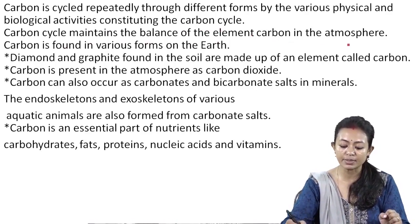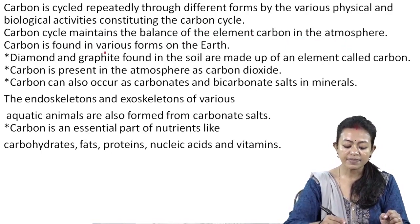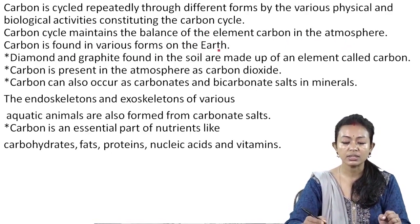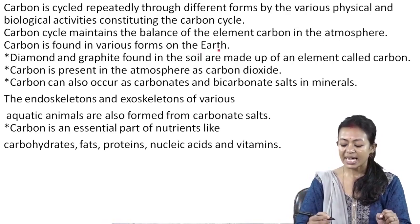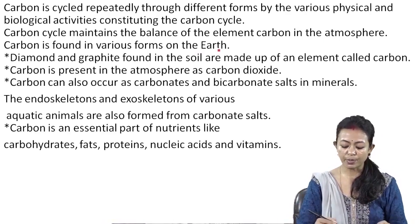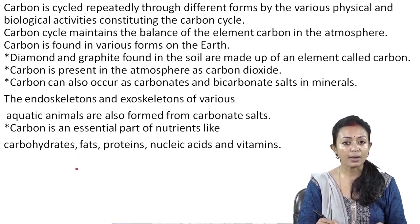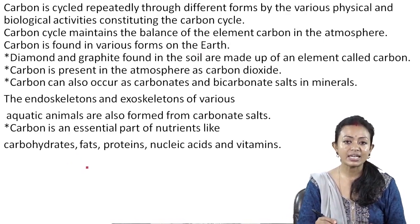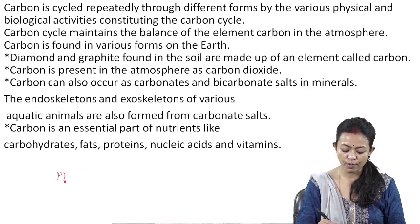The carbon cycle maintains the balance of the element carbon in the atmosphere. Carbon is found in various forms on the Earth. In the atmosphere, carbon dioxide is present, and it is being taken up by the plants for the process of photosynthesis.